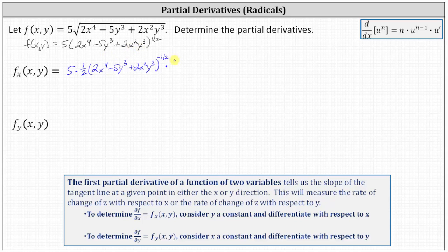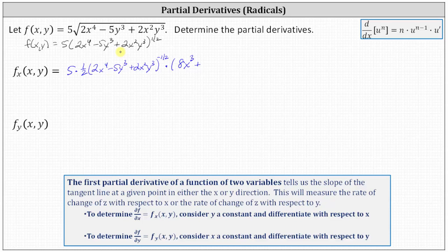We differentiate 2x to the fourth minus 5y cubed plus 2x squared y cubed with respect to x, treating y as a constant. The derivative of 2x to the fourth with respect to x is 8x cubed, minus the derivative of 5y cubed with respect to x, which is zero because we're treating y as a constant, and then plus the derivative of 2x squared y cubed with respect to x, treating y as a constant, which gives us 4x y cubed.